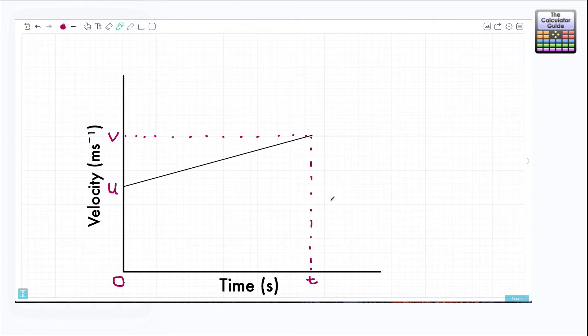Let's have a look at the key feature of this graph and that is that we have a sloping line here going from our initial velocity of u to our final velocity of v. In this particular case it's an increase. It could have been sloping in the other direction if u was greater and v was smaller.